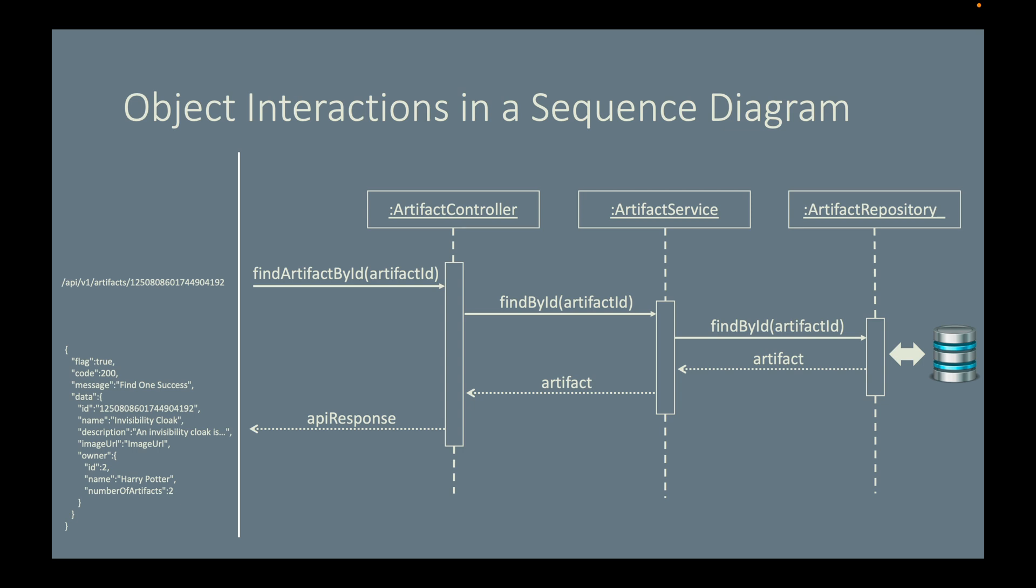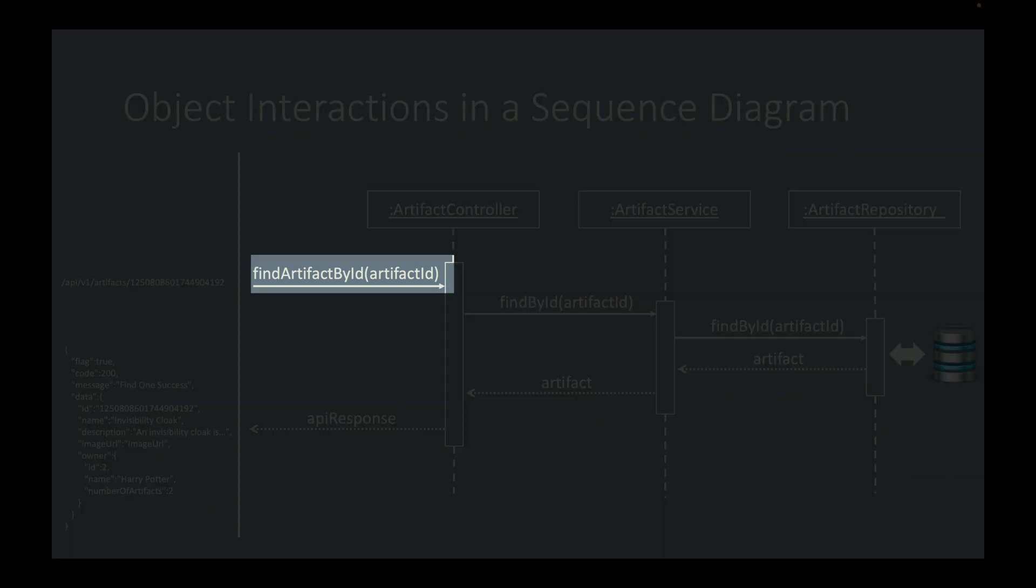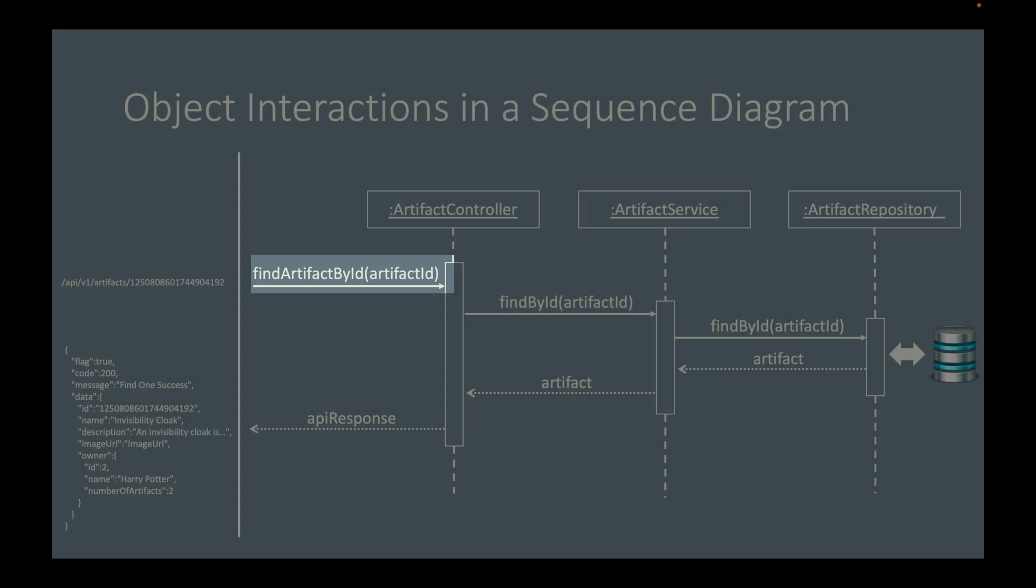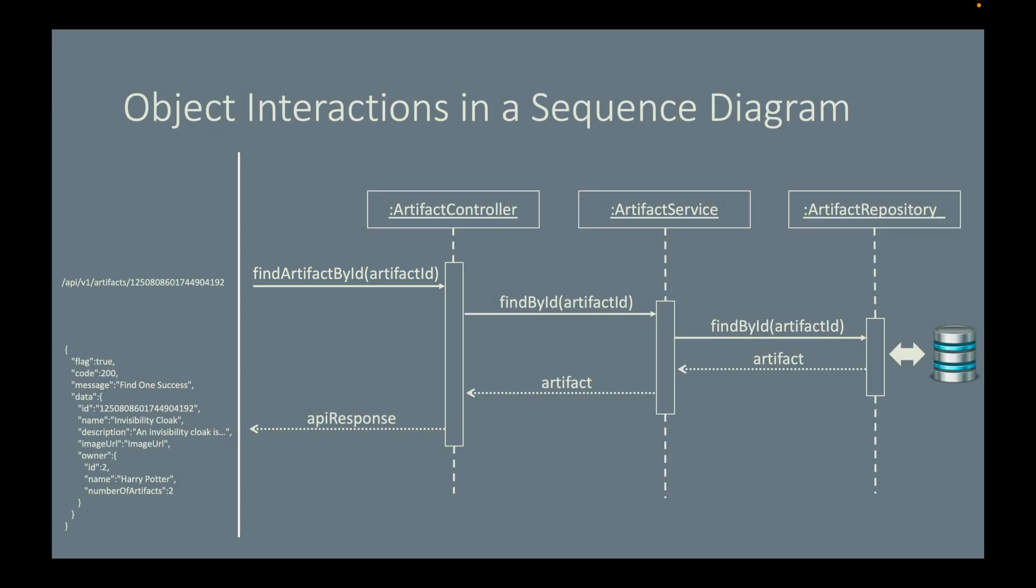So, arrows with solid lines represent method invocations. In this example, when the incoming request comes in, Spring Boot will invoke the FindArtifactById method that belongs to the ArtifactController, and pass an ID to it.